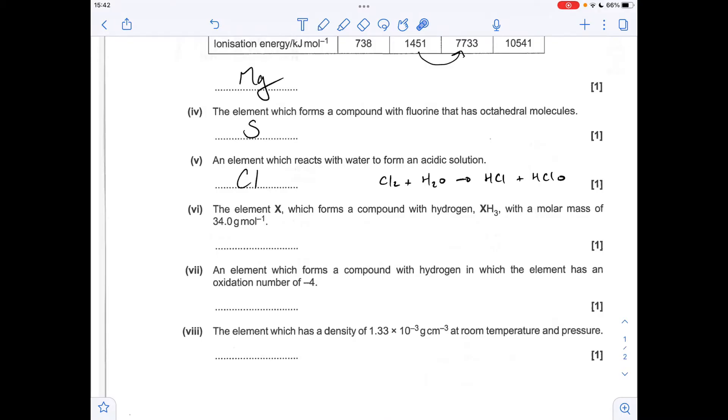Next one, so to get the MR of X, we basically just subtract three from 34, so we get 31, so of course that's phosphorus.